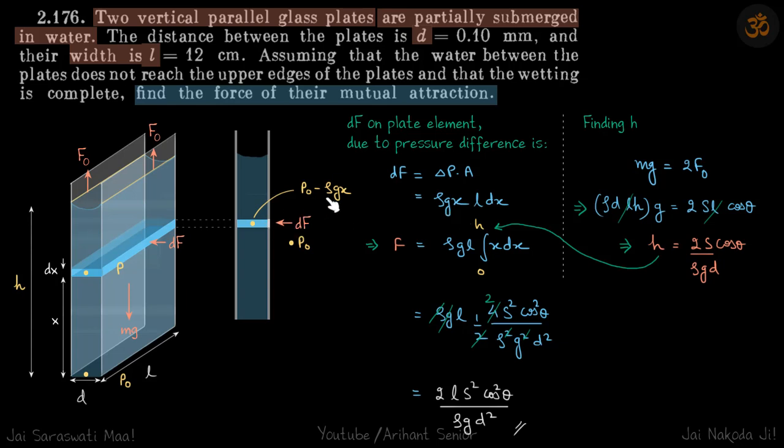So area is L into dx, and delta P will be rho gx. P naught minus rho gx minus P naught, that is delta P.